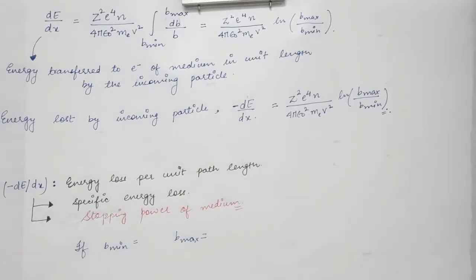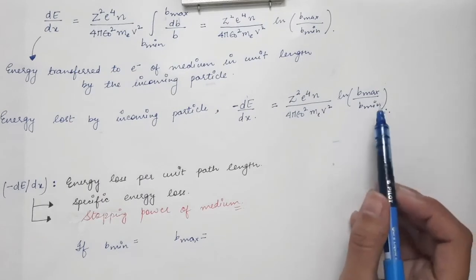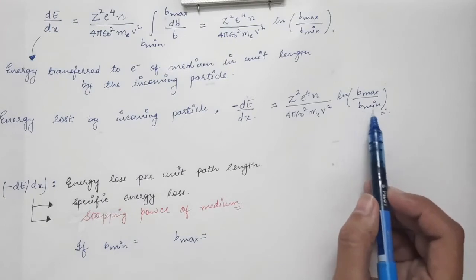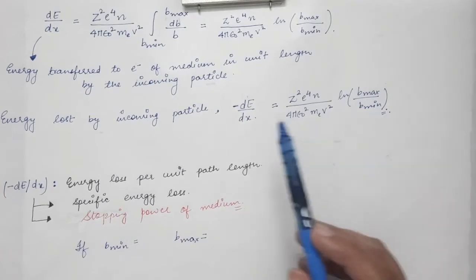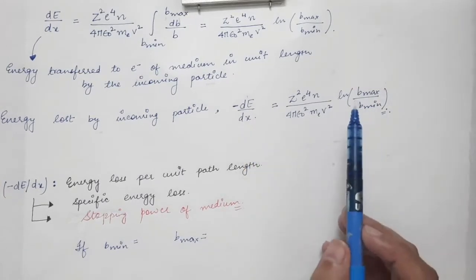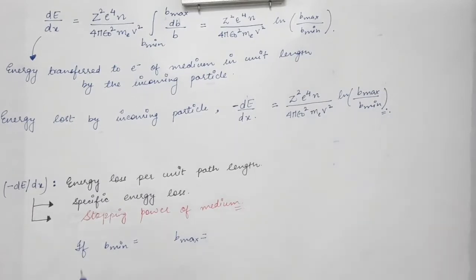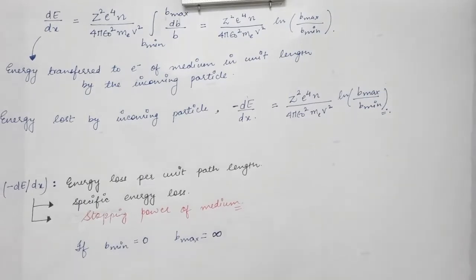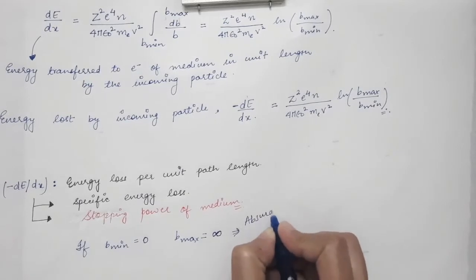Now, what are the values of b_max and b_minimum? If we insert b_minimum equal to 0 and b_maximum equal to infinity, that gives an undefined result — an absurd result. So we cannot simply use b_minimum as 0 and b_maximum as infinity.